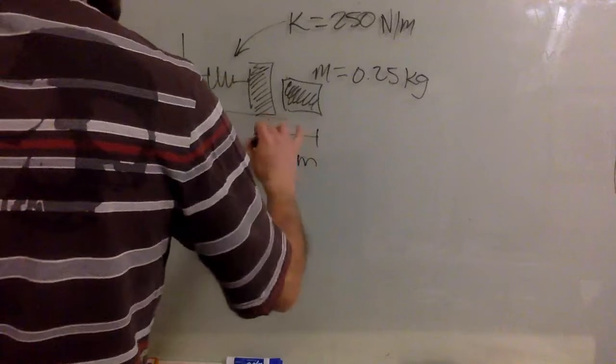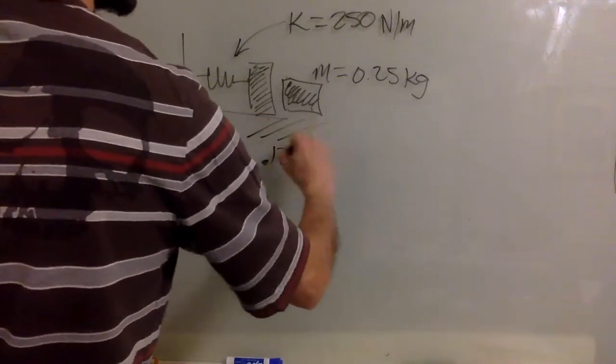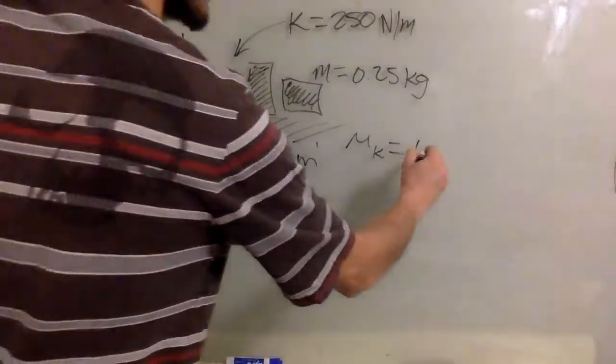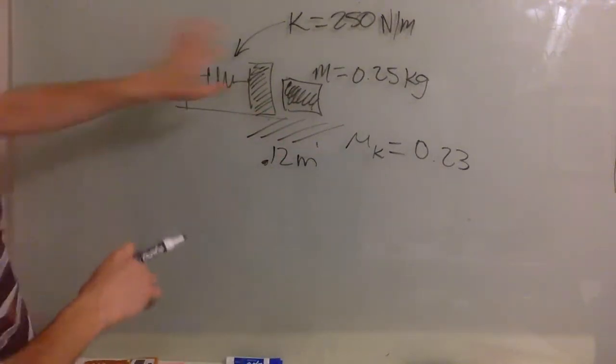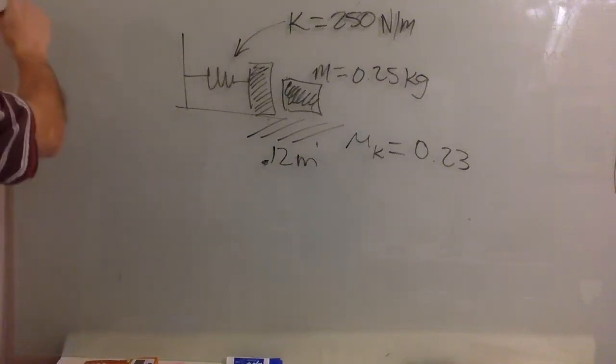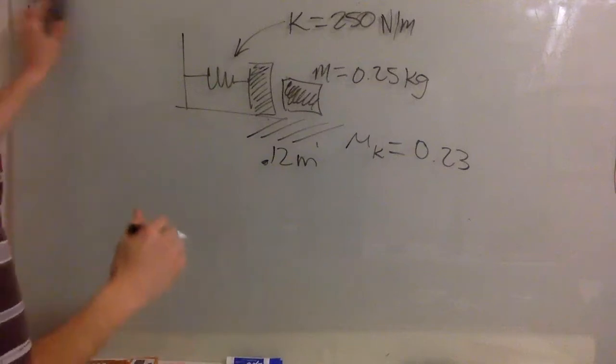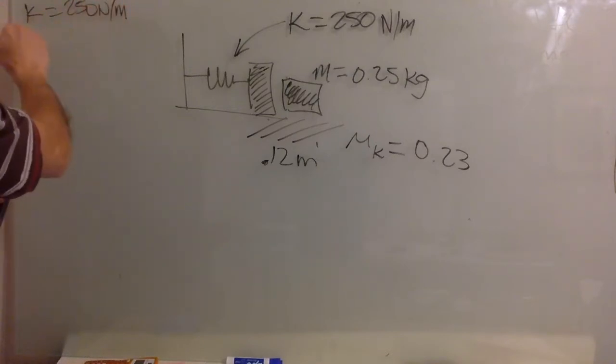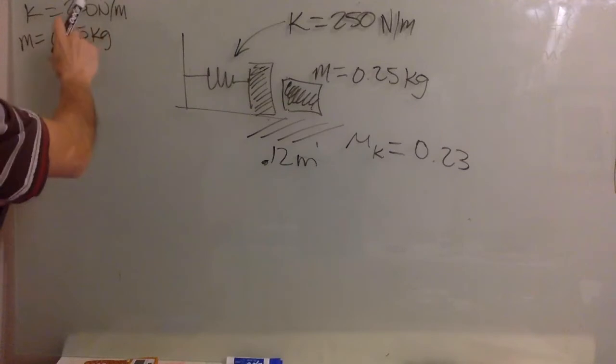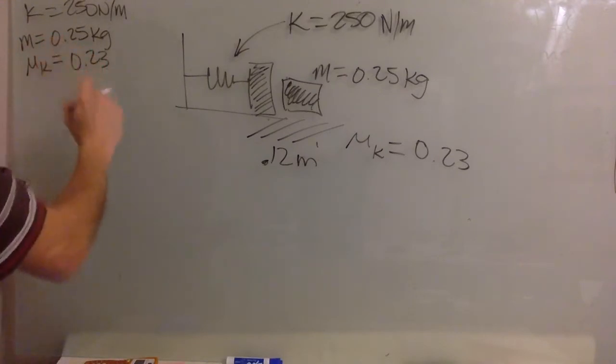And it actually has friction. So let's kind of draw it over here. The coefficient of kinetic friction, 0.23. And you have to get the speed of the box when it is launched. Okay. So I'm going to rewrite these quantities over here. 250 newtons per meter. Mass of the box, 0.25 kilograms. Mu k, the coefficient of kinetic friction, 0.23. And the displacement, 0.12 meters.